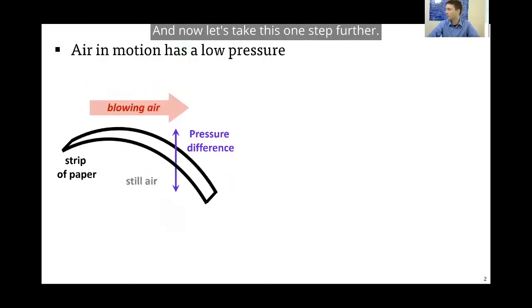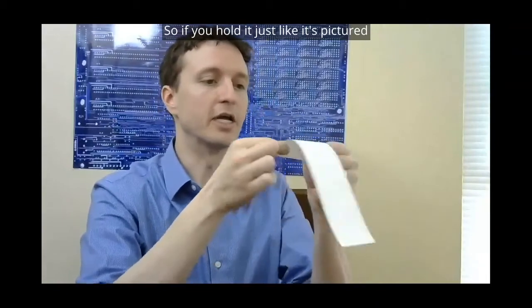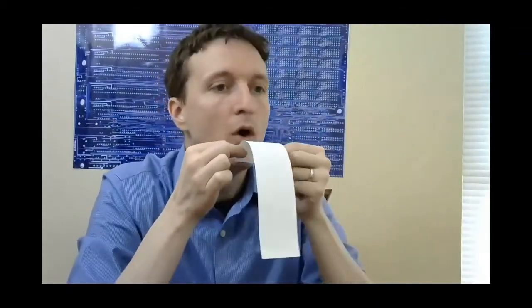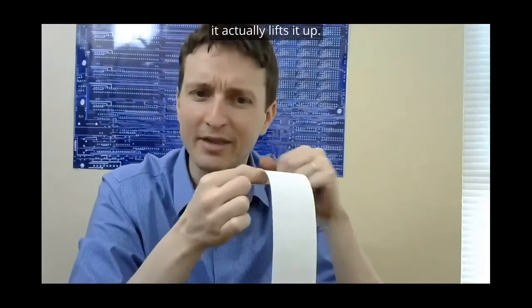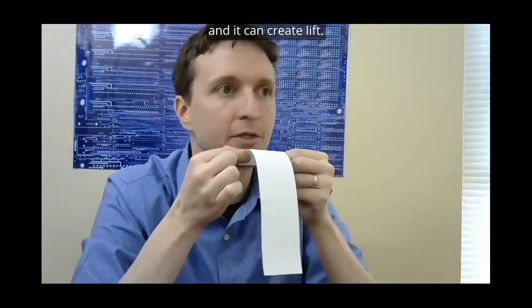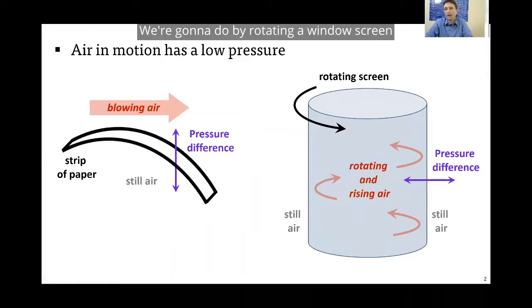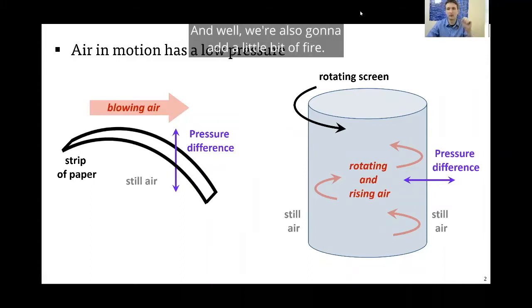Now let's take this one step further. I'm going to talk about a different way we can create pressure differences, and that's with moving air. This is a fun demo that all you need is a strip of paper. If you hold it like this picture and blow right over the top of the paper, it actually lifts it up. This is just like an airplane wing actually. Air in motion is lower pressure, and it can create lift. So that's one way to create a pressure difference. And the next one I want to talk about, we're going to do by rotating a window screen that I've woven into a cylinder. And we're also going to add a little bit of fire.